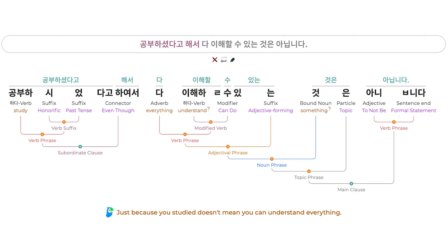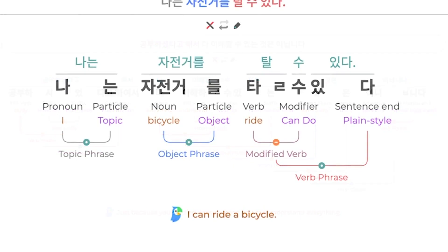This is the part of Miranay Explorer that is undergoing the most research and development. Korean, like most natural languages, allows for naturally ambiguous sentences, and so sometimes Explorer may not pick the best fitting construction for a given sentence, particularly long complex sentences. Please let us know if you encounter such a case, as we will use all the feedback we get to continually improve the phrase structure parser.